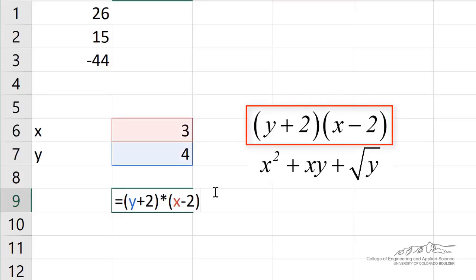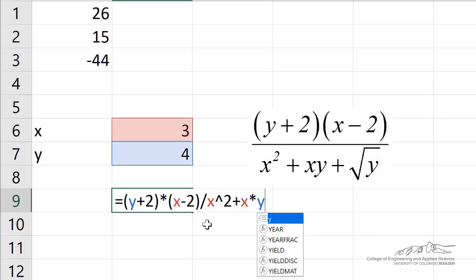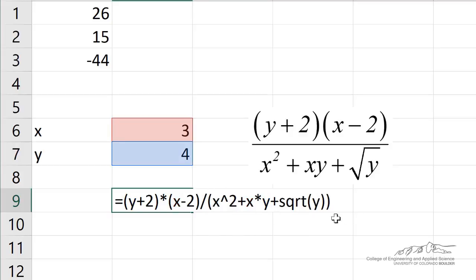I'm going to start with the numerator. So we can multiply Y plus 2 by X minus 2, and then I'm going to divide by the denominator. Now, if I just started writing X squared plus X times Y, there's an error there, because I'm only dividing Y plus 2 times X minus 2 by X squared, and not the entire denominator. Instead, what we need to do is we need to put parentheses around the entire denominator.